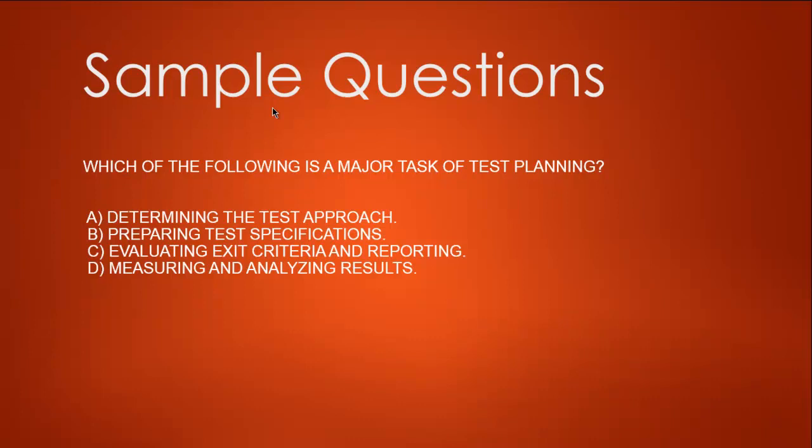The options are: A - determining the test approach, B - preparing test specifications, C - evaluating exit criteria and reporting, and D - measuring and analyzing results. In test planning we go for the test approach and also check entry and exit criteria, so option A looks closer. Preparing test specifications is not why we write test planning.